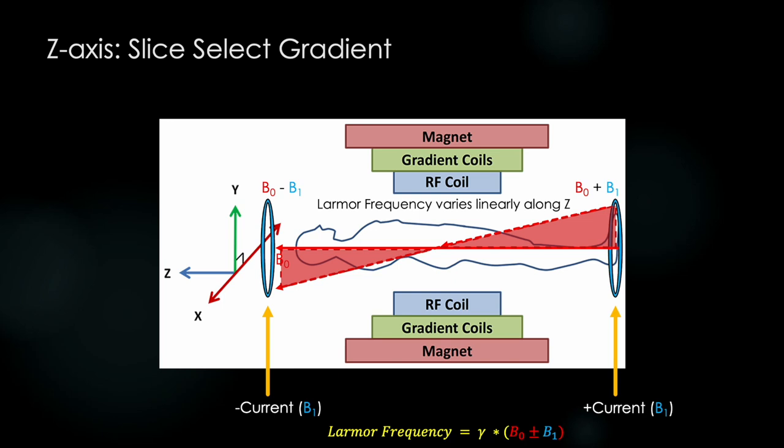To excite a slice in the body, we simply need to turn these electromagnets on and apply an RF pulse at the desired Larmor frequency of the corresponding slice we wish to image. All signal our receiver coils slash antenna records will thus come only from this slice of the body.